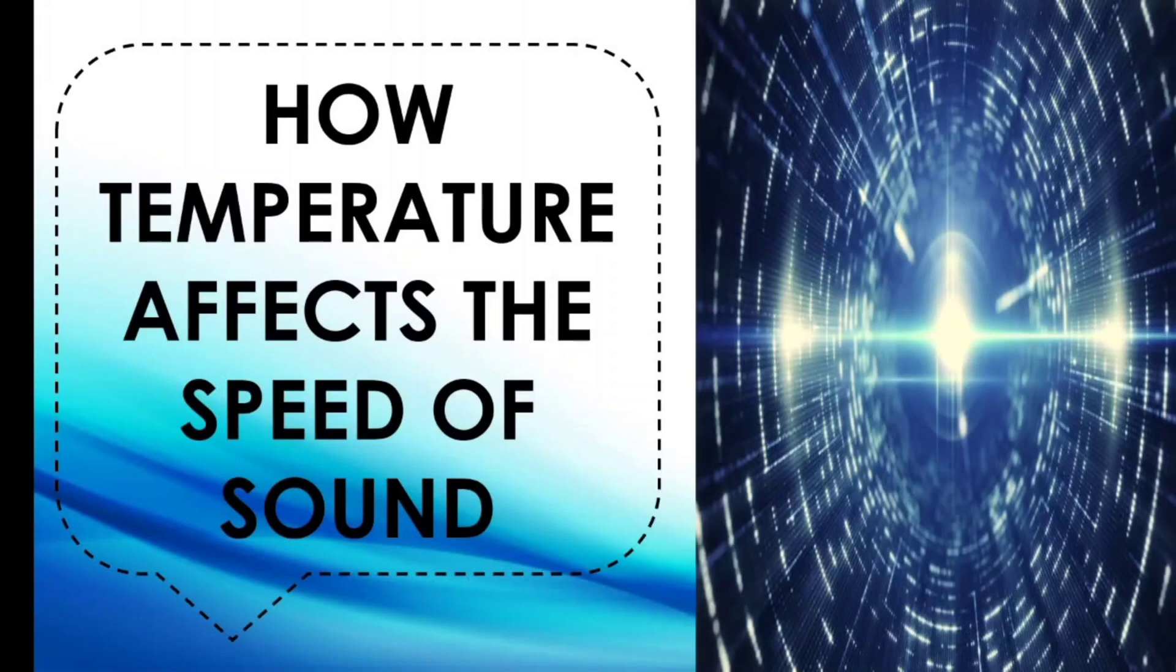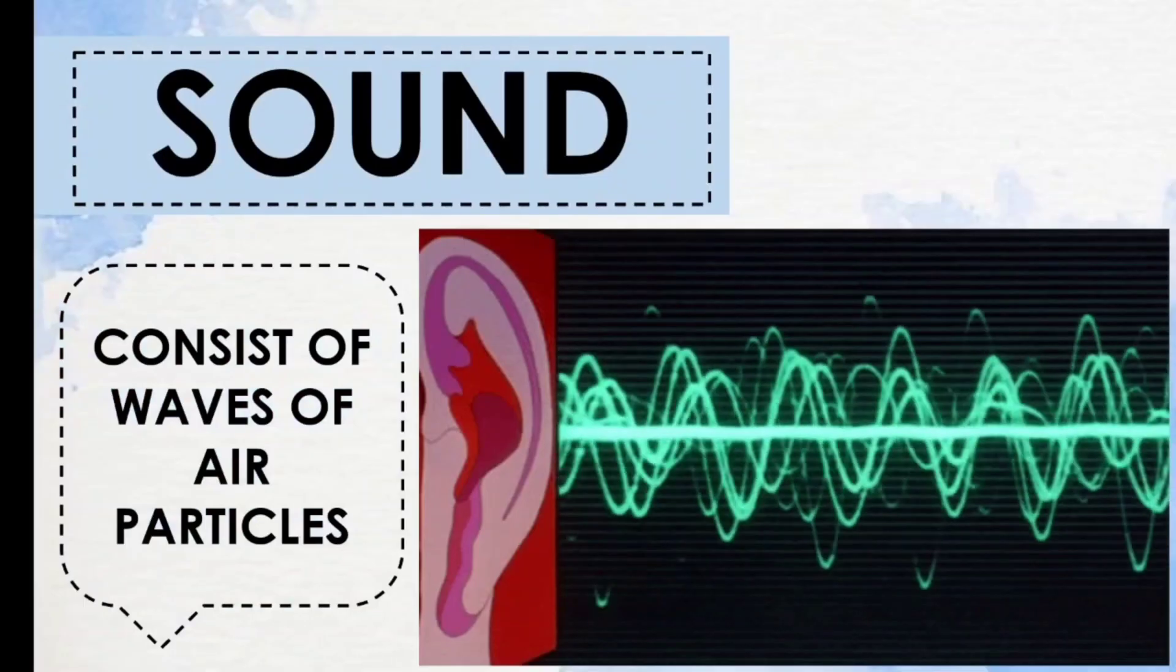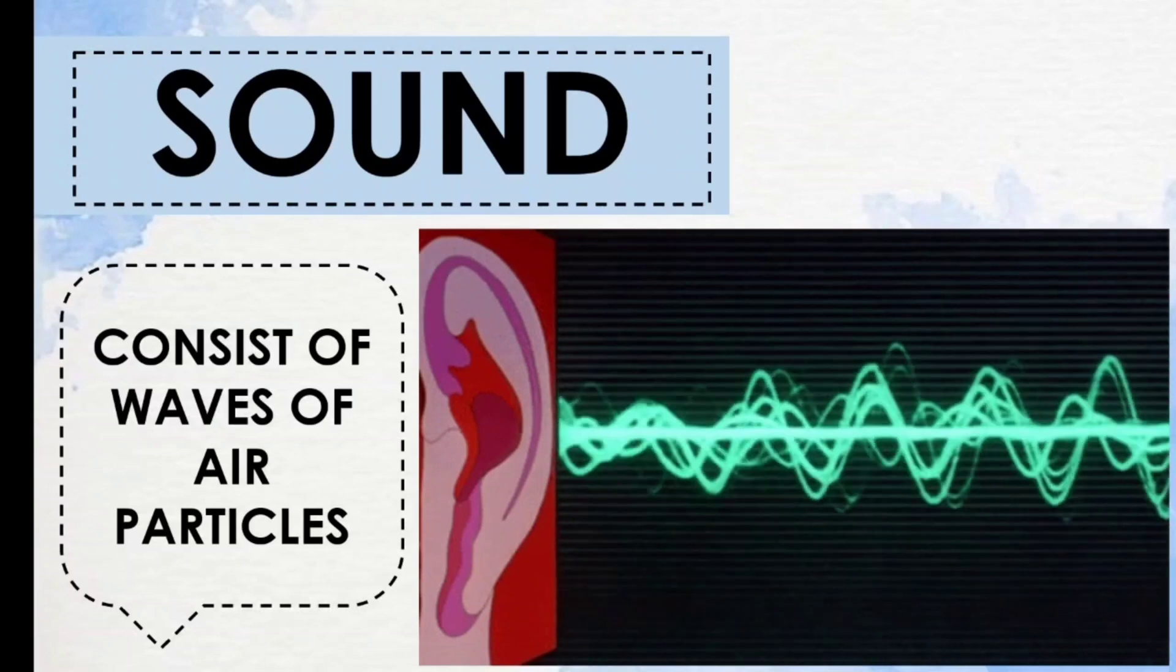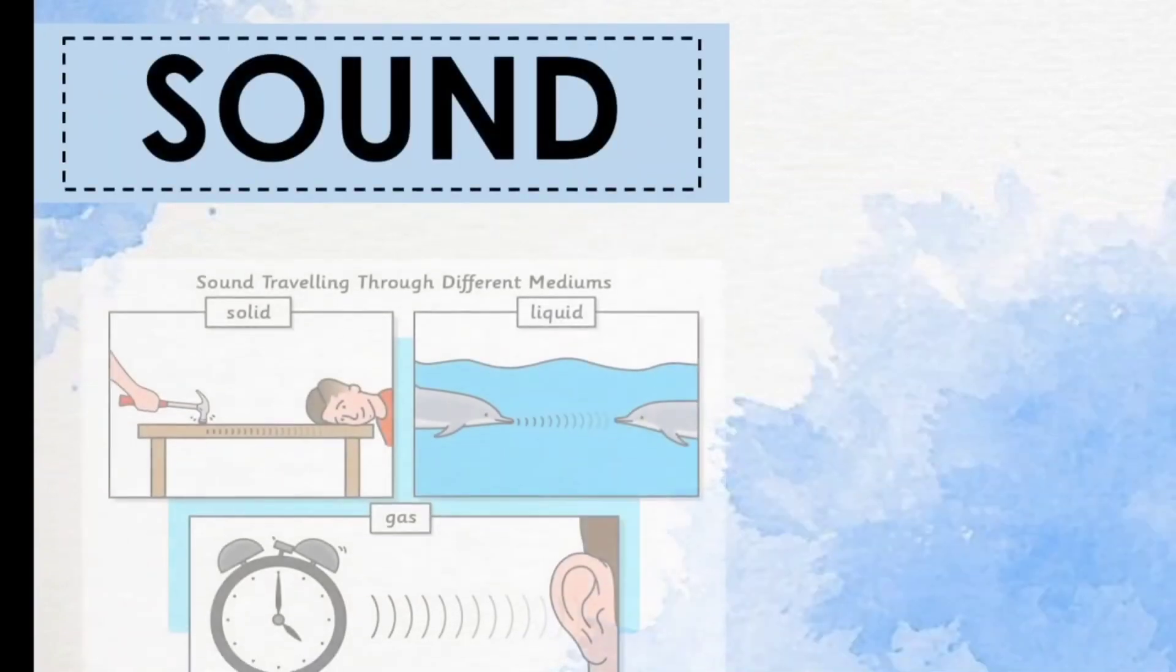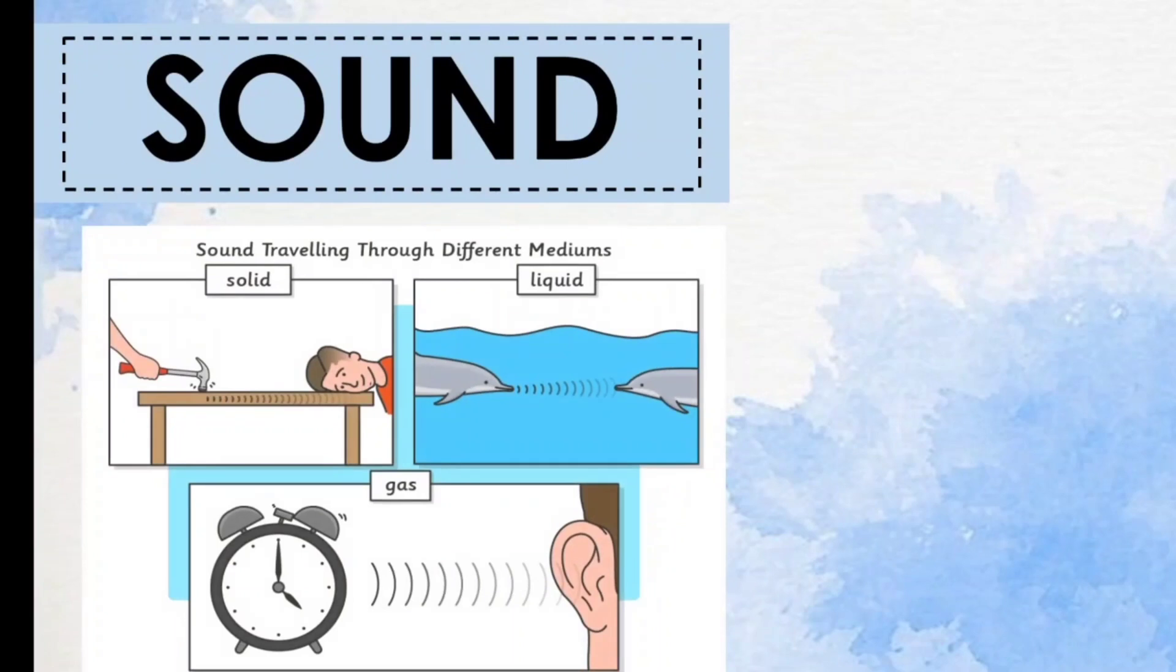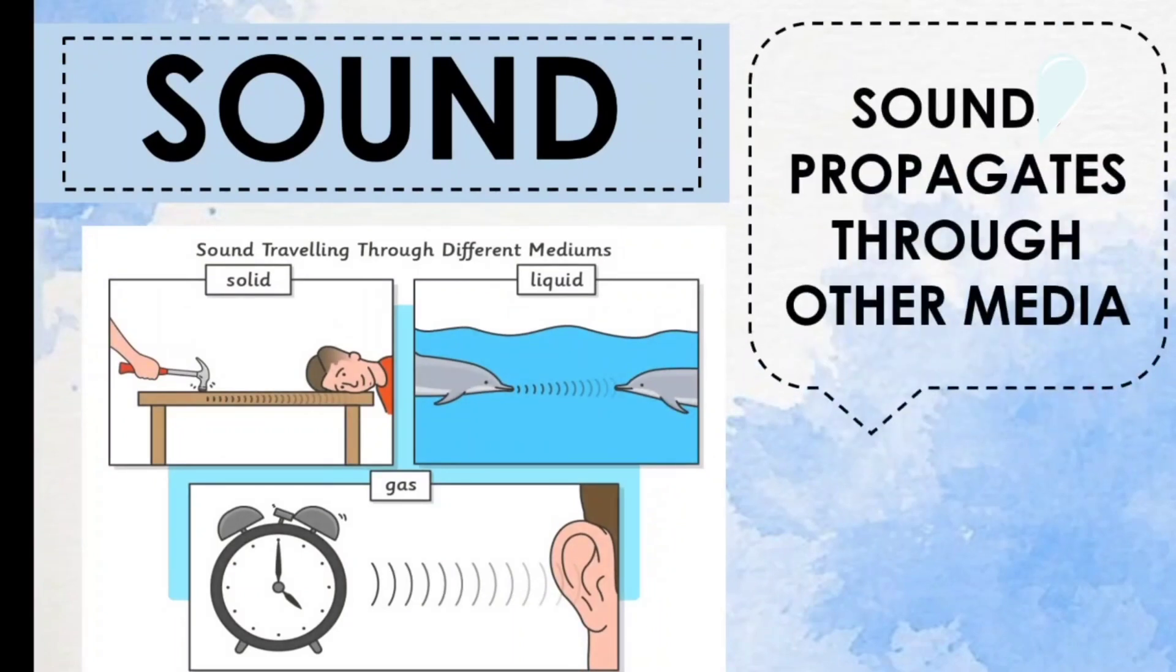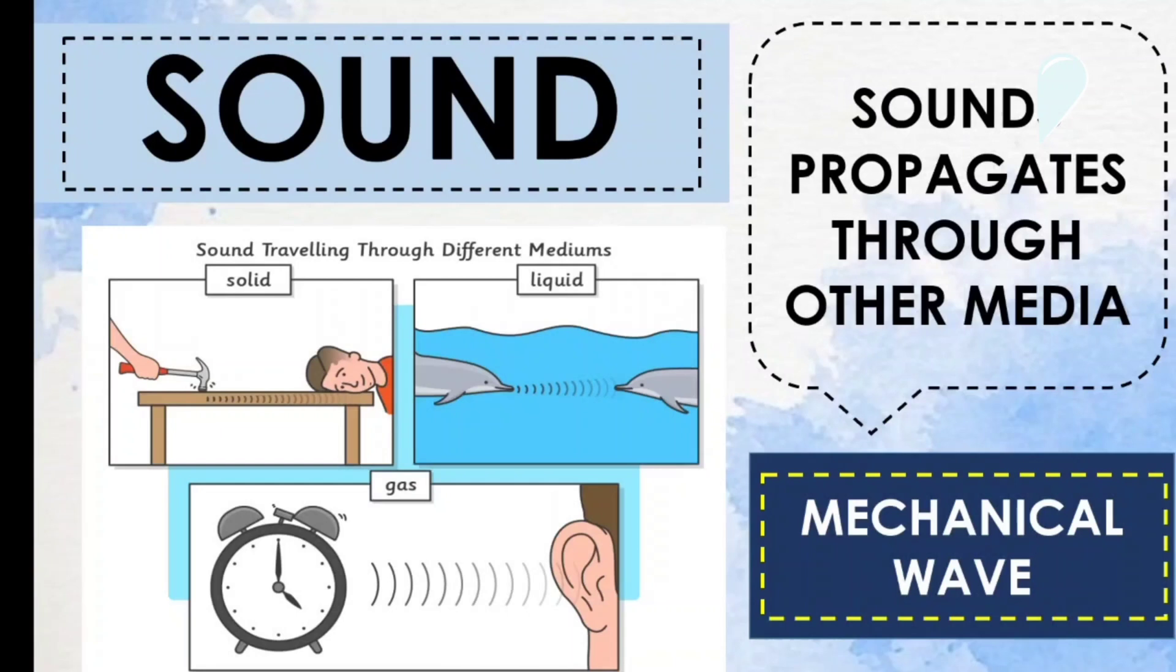But before that, let us first learn the definition of sound. Sound consists of waves of air particles. Generally, sound propagates and travels through air. It can also be propagated through other media. Sound is also considered as a mechanical wave because it needs medium to propagate.